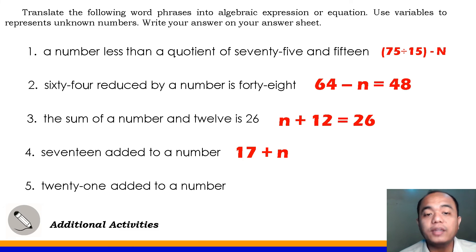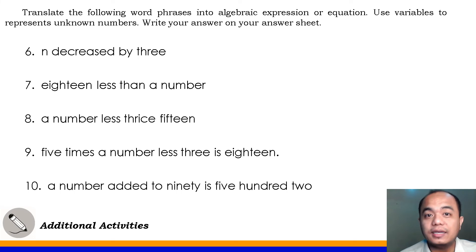Number 5, 21 added to a number. Very good, it's 21 plus N. Good job. Number 6, N decreased by 3. What does decrease mean? What operation does the word decrease represent? It's subtraction, right? So, that's N minus 3.